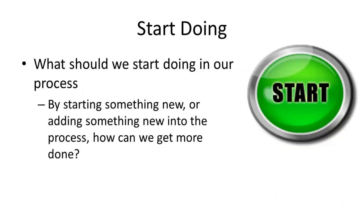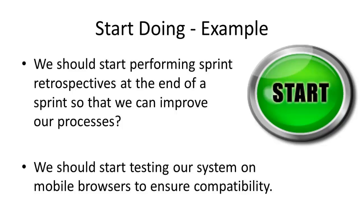What should we start doing in our process? By starting or adding something new into the process, how can we get more done, increase our velocity, or increase our transparency? This is focused on process improvements that involve the entire team, not individual improvements. For example, we should start performing sprint retrospectives at the end of a sprint to improve our processes. Another example: we should start testing our system on mobile browsers to ensure compatibility, or at least use an emulator that simulates mobile screen size. This could save time for developers and testers, allowing work to get through the process the first time rather than failing due to mobile incompatibility.